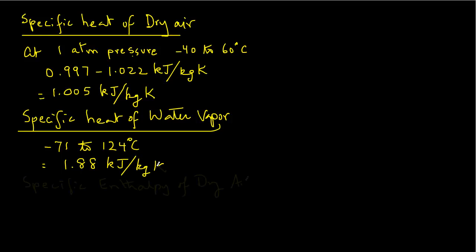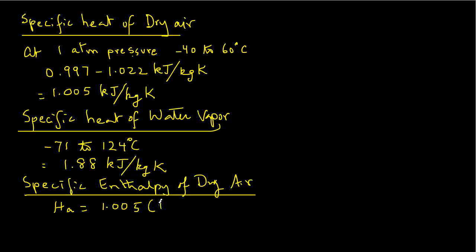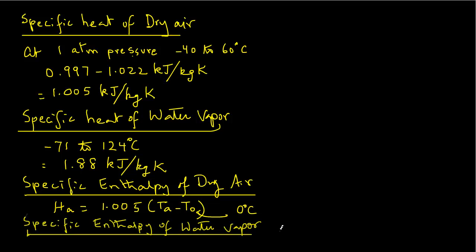The specific enthalpy of dry air is obtained as HA, A stands for dry air and H for enthalpy, equals 1.005 in parentheses TA minus T0, where T0 is the reference temperature. It is customary to use 0 degrees C as a reference temperature in psychrometric calculations. The specific enthalpy of water vapor is obtained using HW equals 2501.4 plus 1.88 in parentheses TA minus T0.